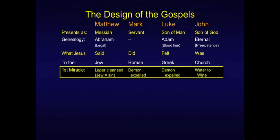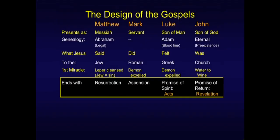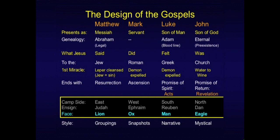The first miracle in Matthew is the leper cleansed — a very Jewish kind of thing, leprosy denoting sin. Both Mark and Luke, speaking to Gentiles, begin with the demon expelled. And John is the mystic — the water to wine. The end of each Gospel reflects those same themes: Matthew the Resurrection, Mark the Ascension, Luke the promise of the Holy Spirit, which sets up his sequel the Book of Acts, and John sets up his sequel, the Book of Revelation. All of these are reflected by the faces of the cherubim — the lion of the tribe of Judah, the ox as a symbol of service, the son of man, and the eagle.